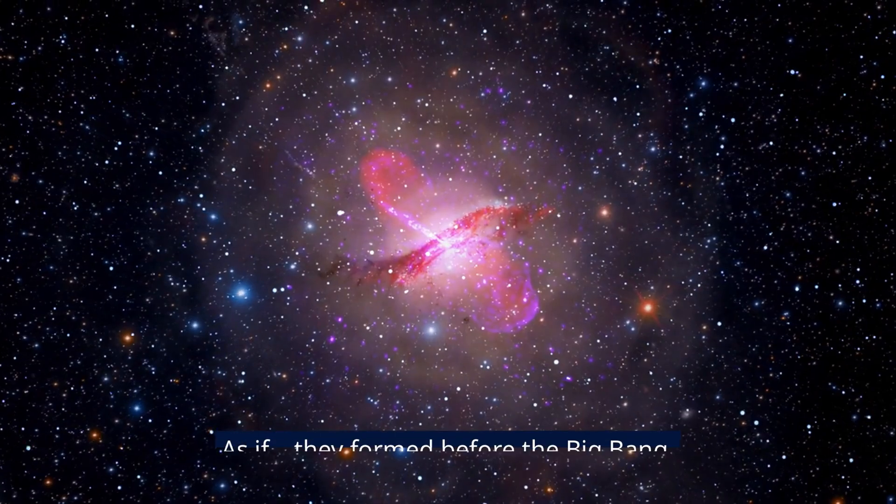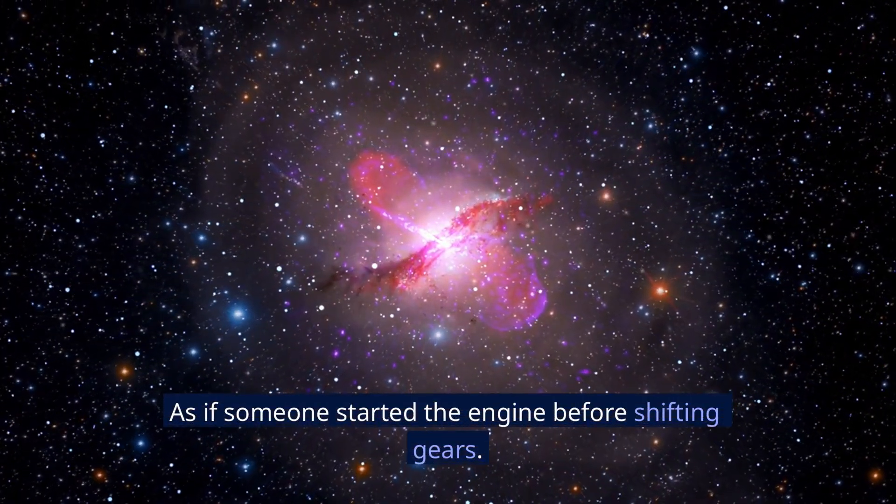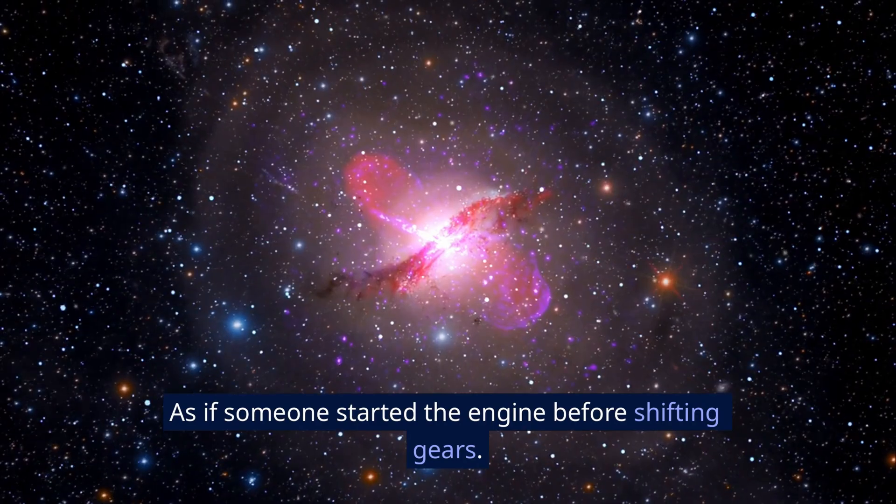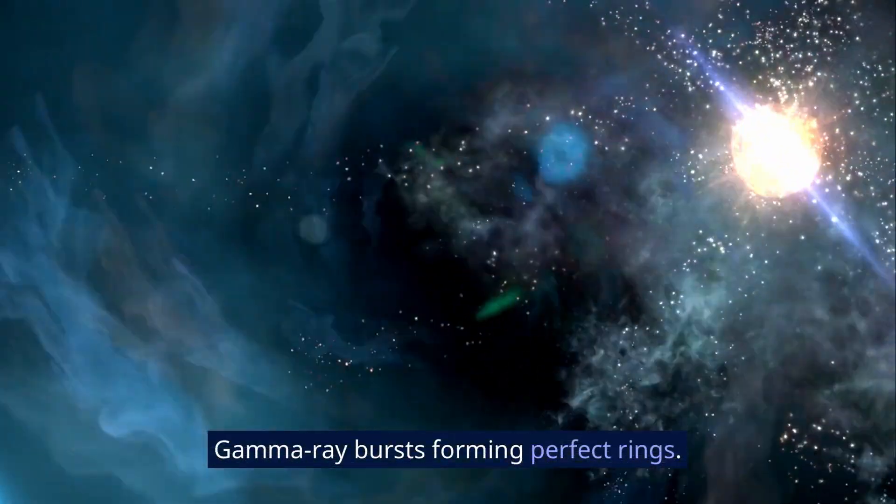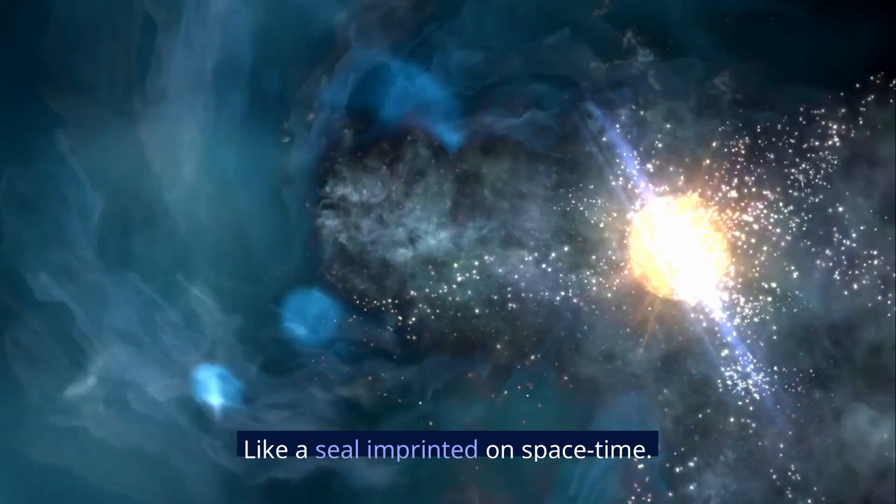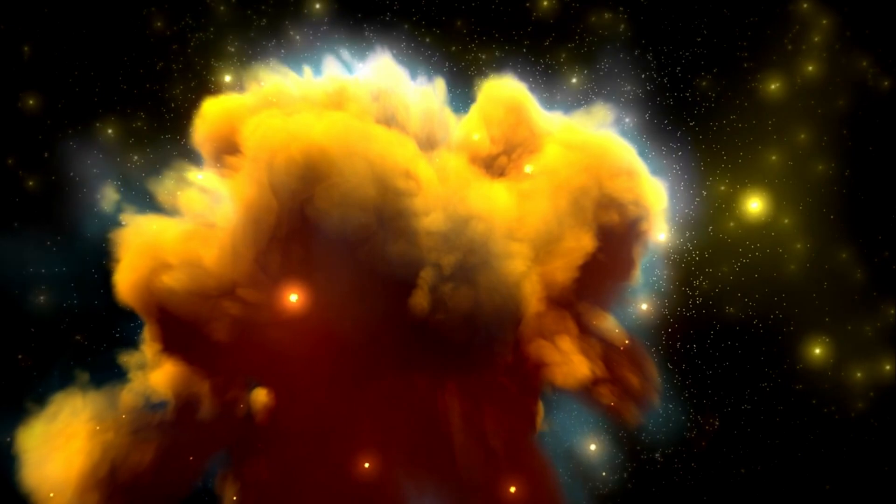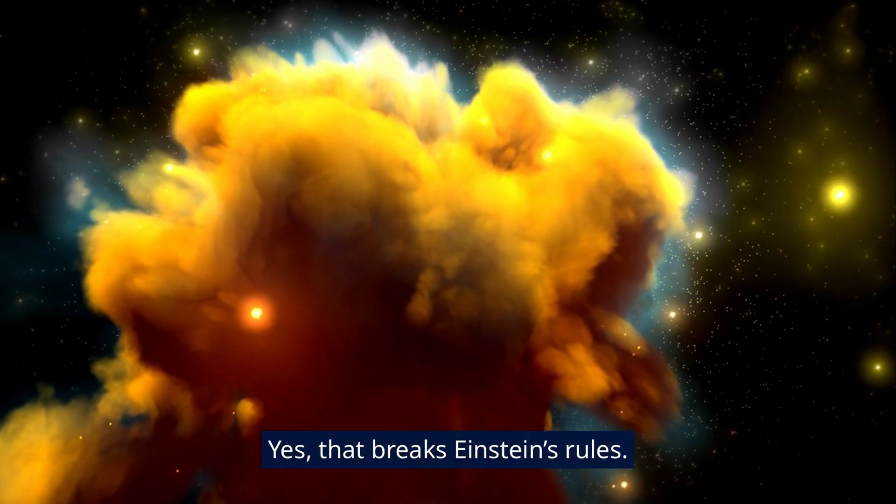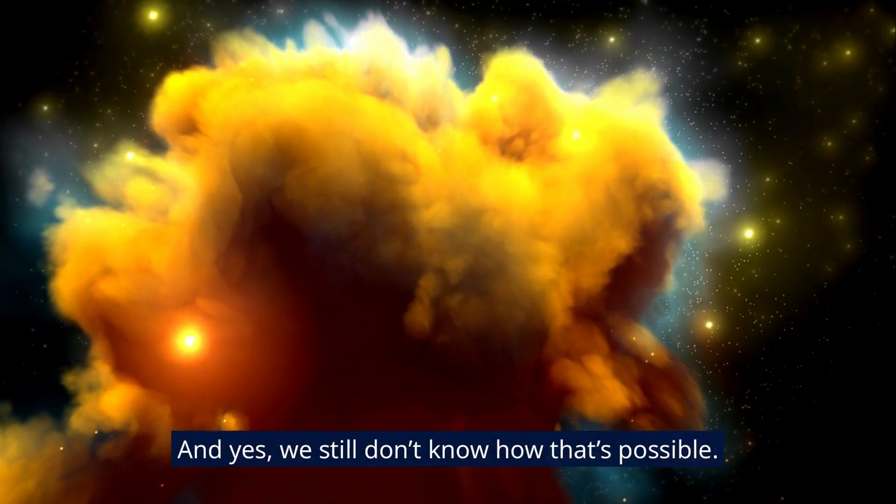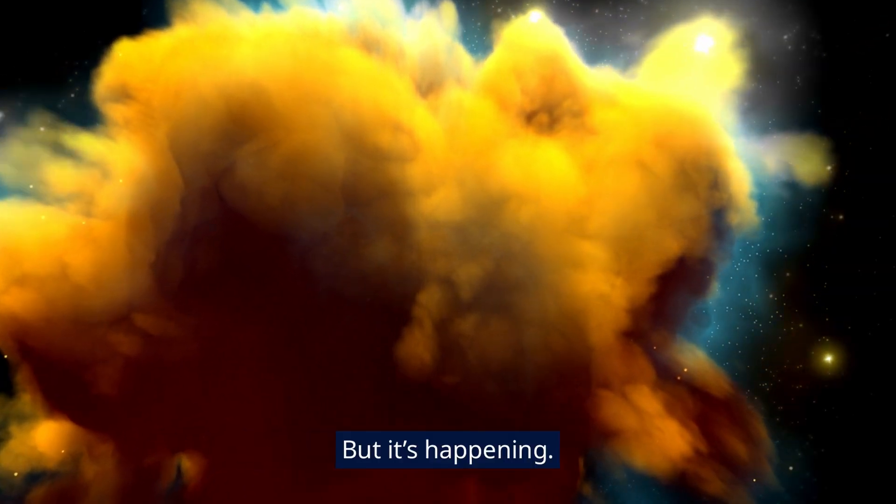Galaxies older than they should be, as if they formed before the Big Bang, as if someone started the engine before shifting gears. Gamma ray bursts forming perfect rings - too big, too precise, like a seal imprinted on space-time. Gas clouds moving faster than light. Yes, that breaks Einstein's rules. And yes, we still don't know how that's possible. But it's happening.